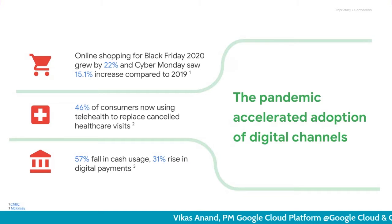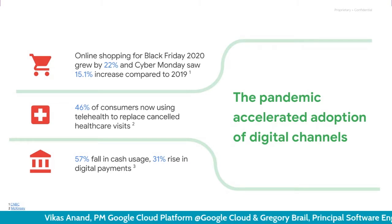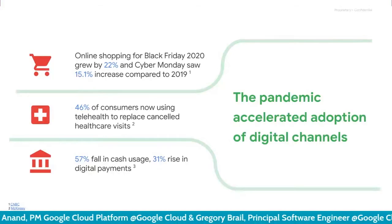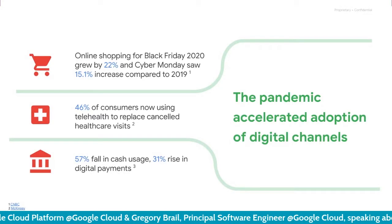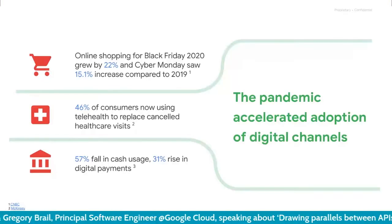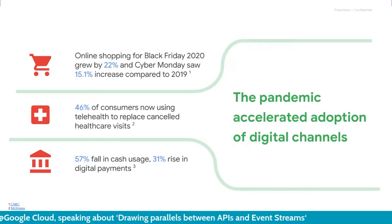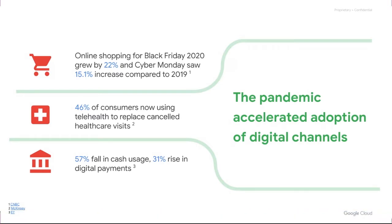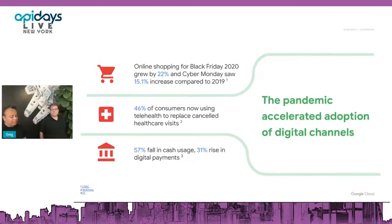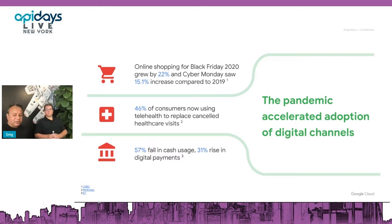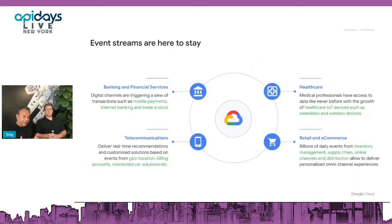And of course, there has been a significant increase in usage of digital currency and digital payments versus actual physical cash. All of this is really requiring a lot of innovation when it comes to delivering these solutions from an infrastructure and application perspective, and that's proliferated the usage of APIs — and of course it ties back to the actual proliferation of events as well.